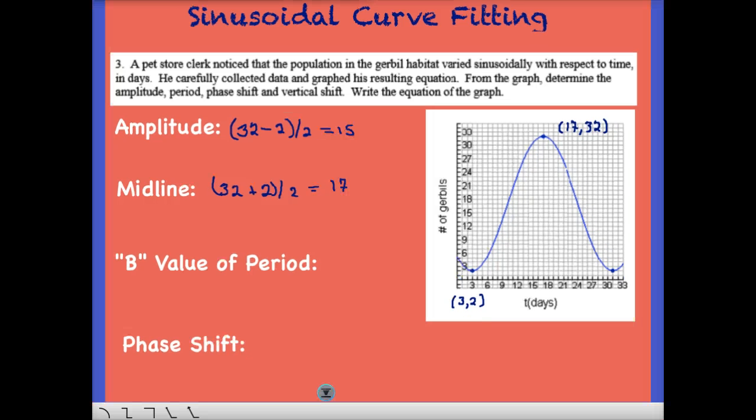In situations like these, it's easier to then draw in the midline to give you a better idea of what we're looking at. In this case, it looks like we have a cosine function, but it's reflected. It's upside down.